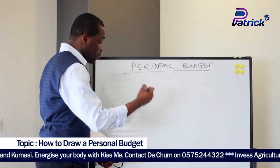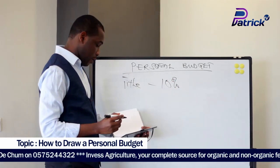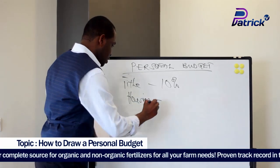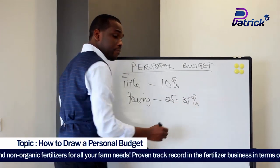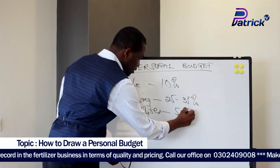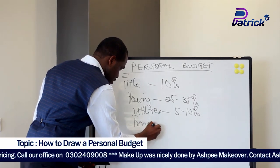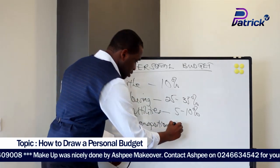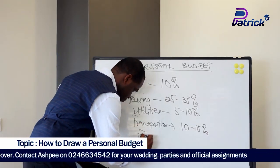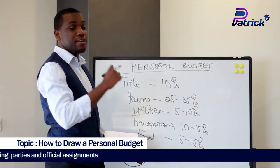The first thing: if you are a Christian or a believer, you need to have your tithe column, which should be 10%. We also need to have housing as a parameter — it should be between 25 to 35% of your income. We also have utilities: water bill and light bill, which should form between 5 to 10% of your income. We also have transportation, which should be between 10 to 15% of your income. Then we have food, which should take between 5 to 15% of your income.